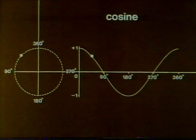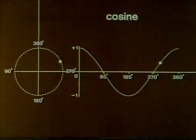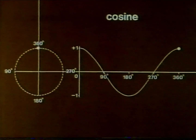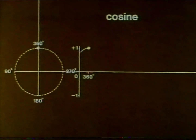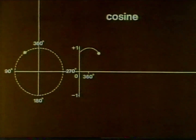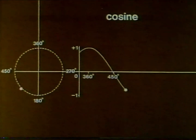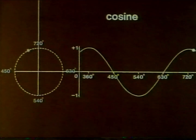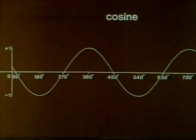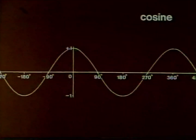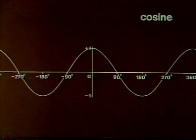The point tracing the graph keeps at the same height as the point on the circle. We needn't stop at one revolution. The graph continues to the right and repeats itself every 360 degrees. It also continues to the left for negative angles.